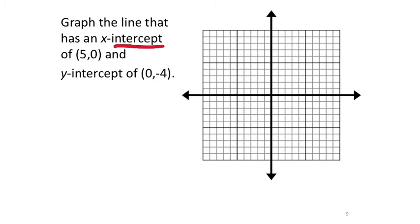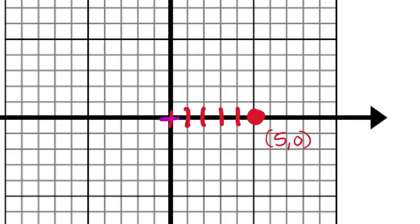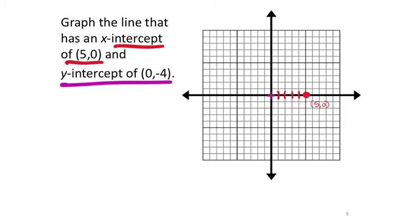On this one, the x-intercept is (5, 0). Starting from the origin on the x-axis, going to the right 5: 1, 2, 3, 4, 5 — that red point is where this line crosses the x-axis. The y-intercept is at (0, negative 4) — start at the origin and go down 4: 1, 2, 3, 4.